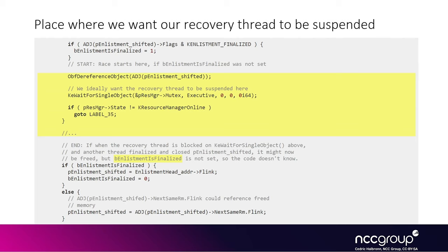In the yellow region, the most promising line to force the recovery thread to block is the KE WaitForSingleObject call. The first call in this yellow region is ObfReferenceObject, which changes the object header — a basic operation that doesn't typically rely on any blocking state. Then there is KE WaitForSingleObject, which is useful because the thread might be interrupted by the scheduler. Finally, there is an if condition, which is also a basic and fast operation. So typically we want to congest the resource manager mutex so the KE WaitForSingleObject call takes more time.